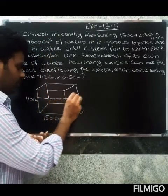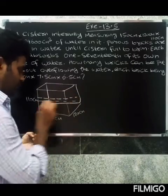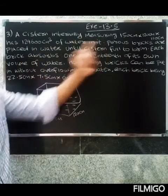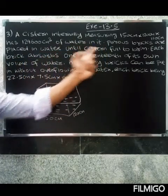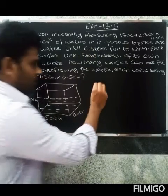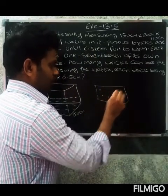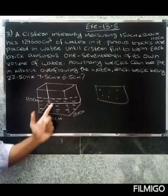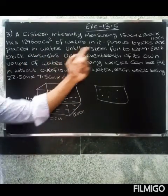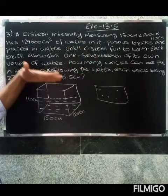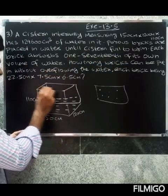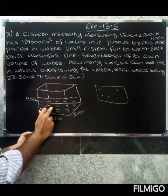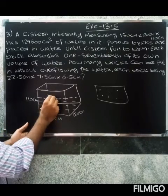Porous bricks are placed in water until the cistern is full to the brim. Each brick absorbs one-seventeenth of its own volume of water. How many bricks can be put in without the water overflowing?